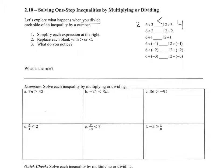If you have 6 divided by 2, that's 3. 12 divided by 2, that's 6. 3 is less than 6. If we divide by 1, we have 6 and 12. 6 is still less than 12. So all these numbers that we're dividing by are positives, and it still stays less than.